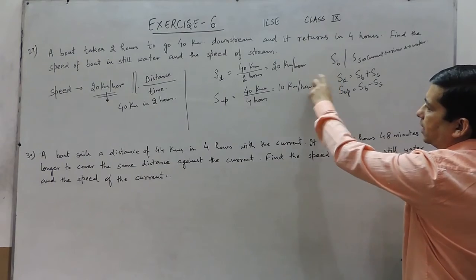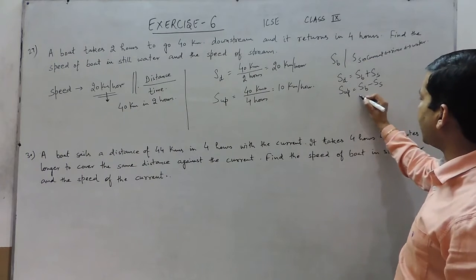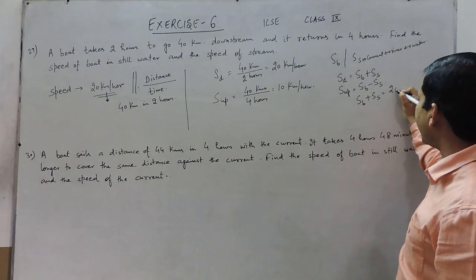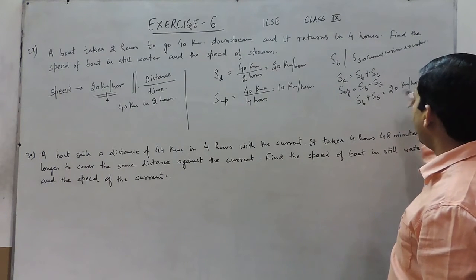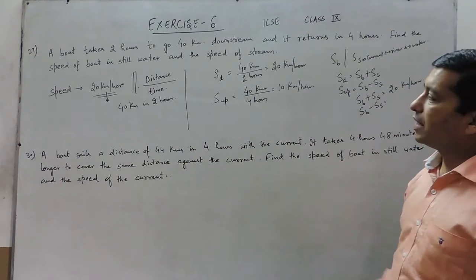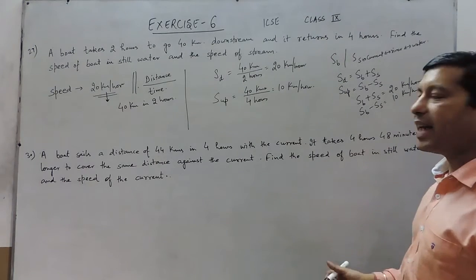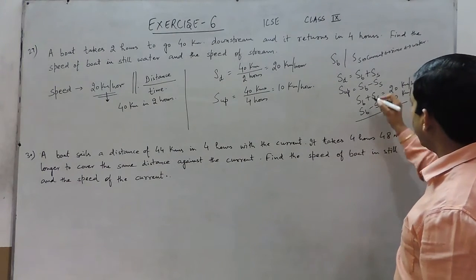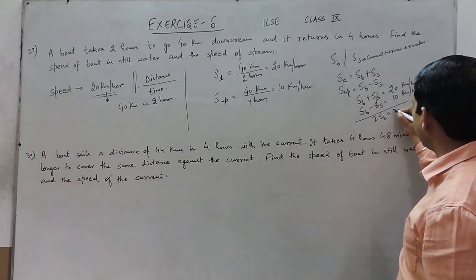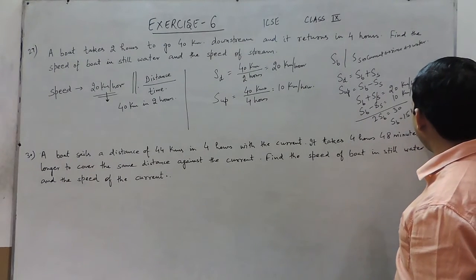Looking at these two equations, we know speed downstream is 20 and speed upstream is 10. So we can write: speed of boat plus speed of stream equals 20 km per hour, and speed of boat minus speed of stream equals 10 km per hour. These are two linear equations. If we add them, the stream speed terms cancel out, giving twice the speed of boat equals 30, so the speed of boat becomes 15 km per hour.